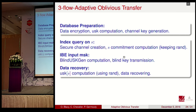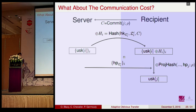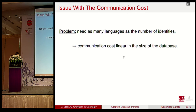However, the blind key-generation algorithm used here is not truly adaptive. For each identity, the server must send both a masked user secret key and a projection key — one for each line of the database — which means sending two times the database per request. This is not adaptive and results in a linear communication cost problem.